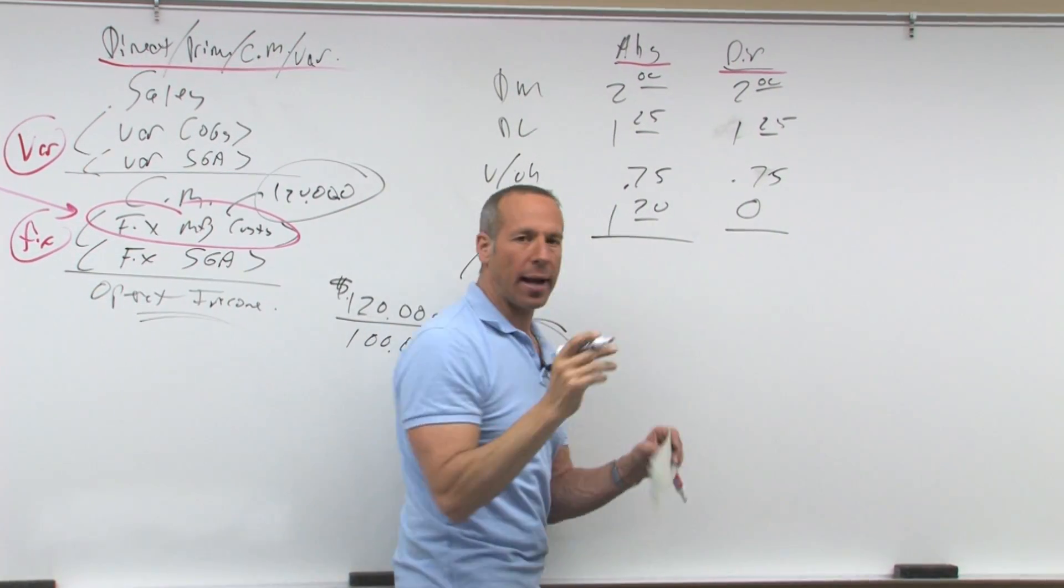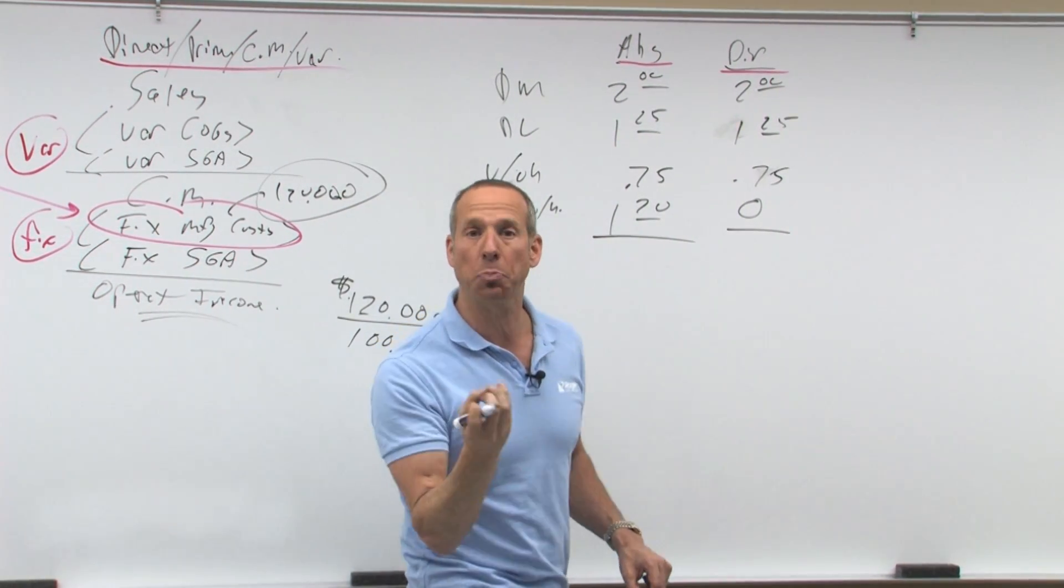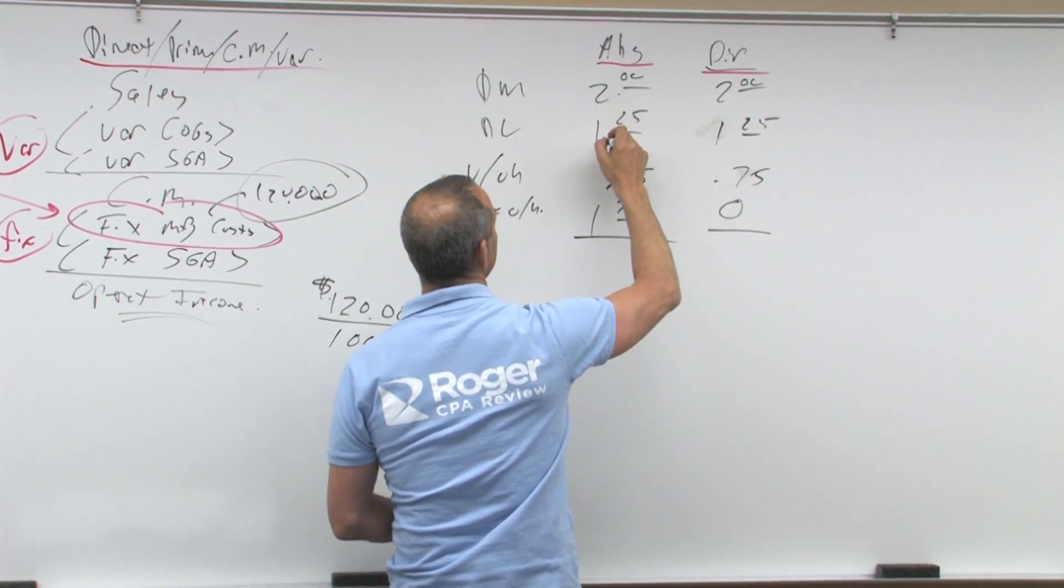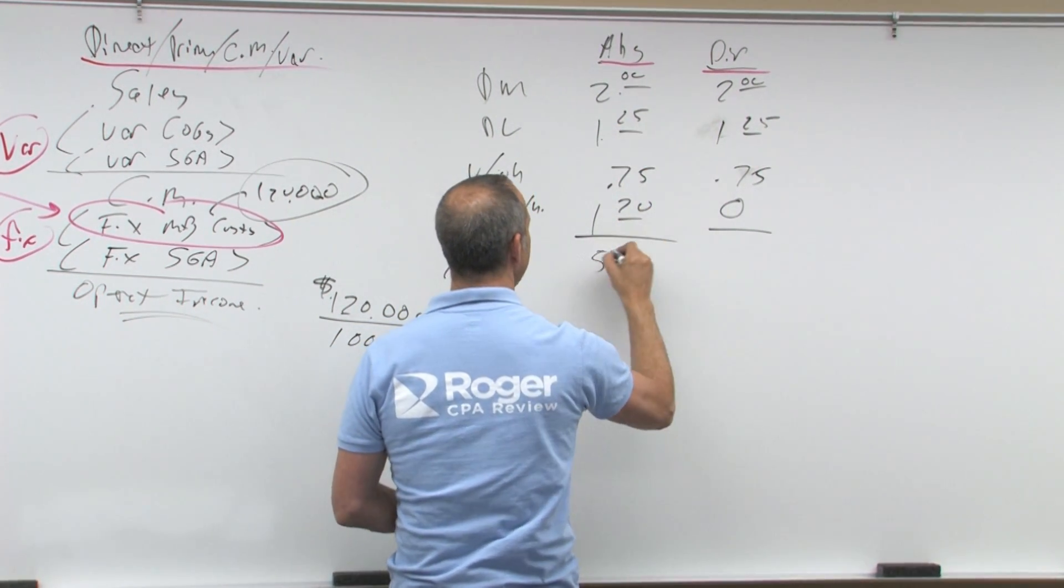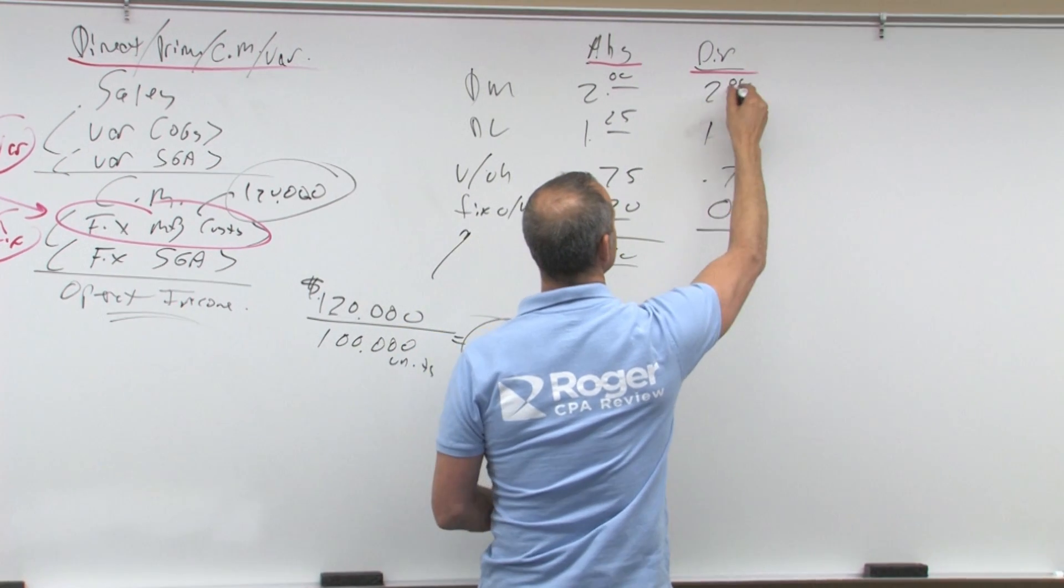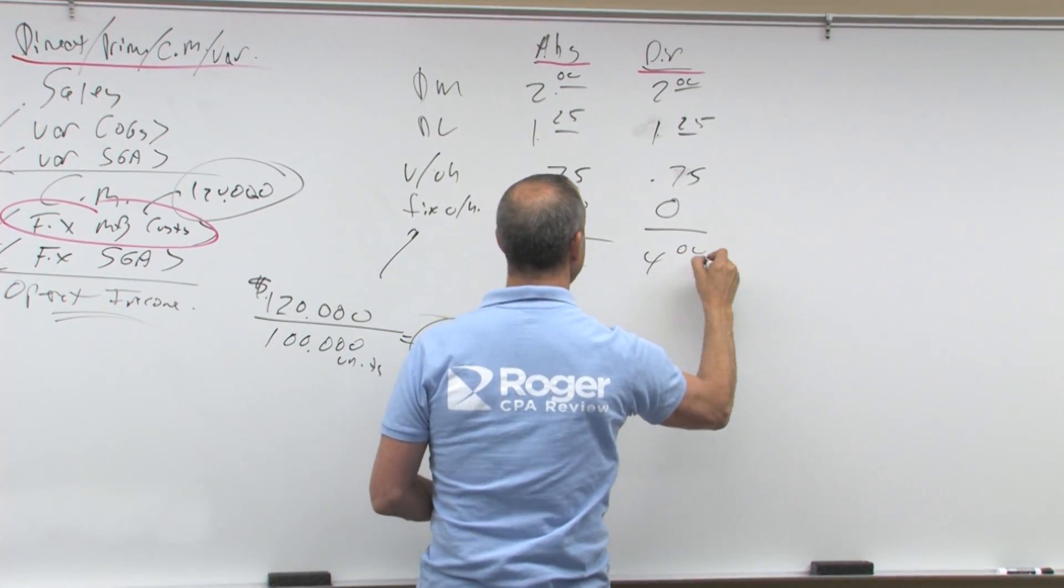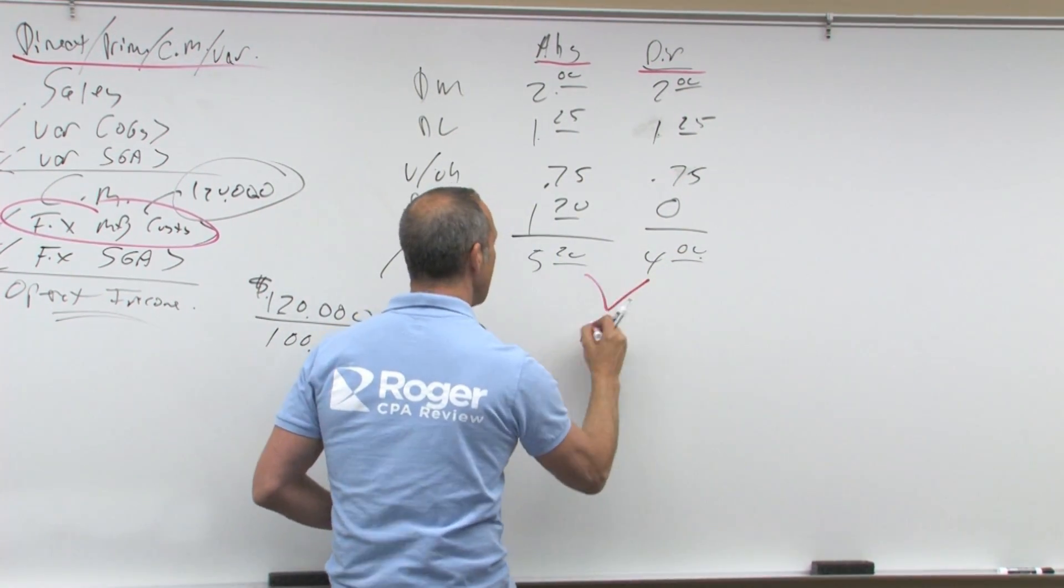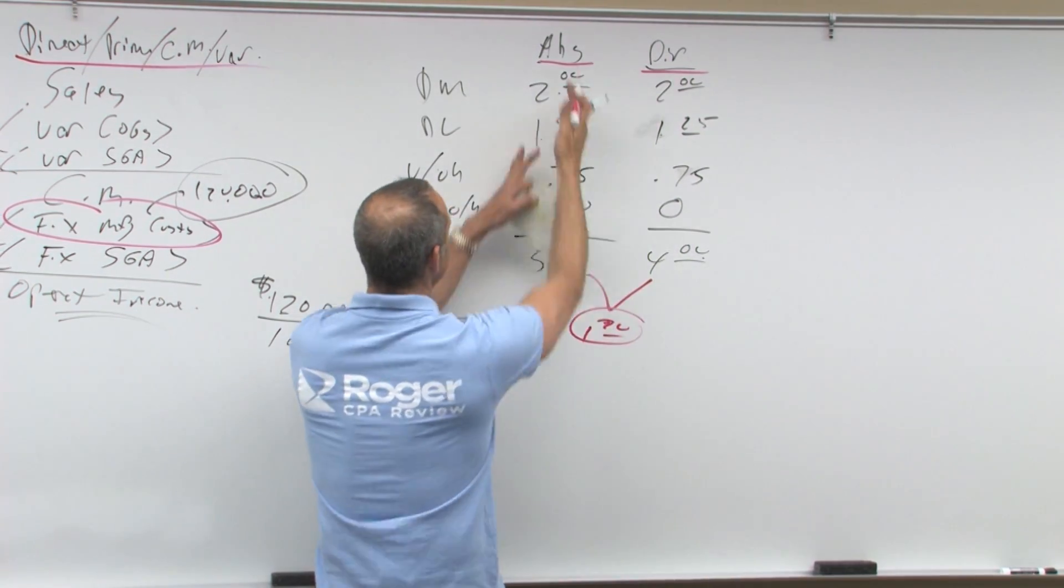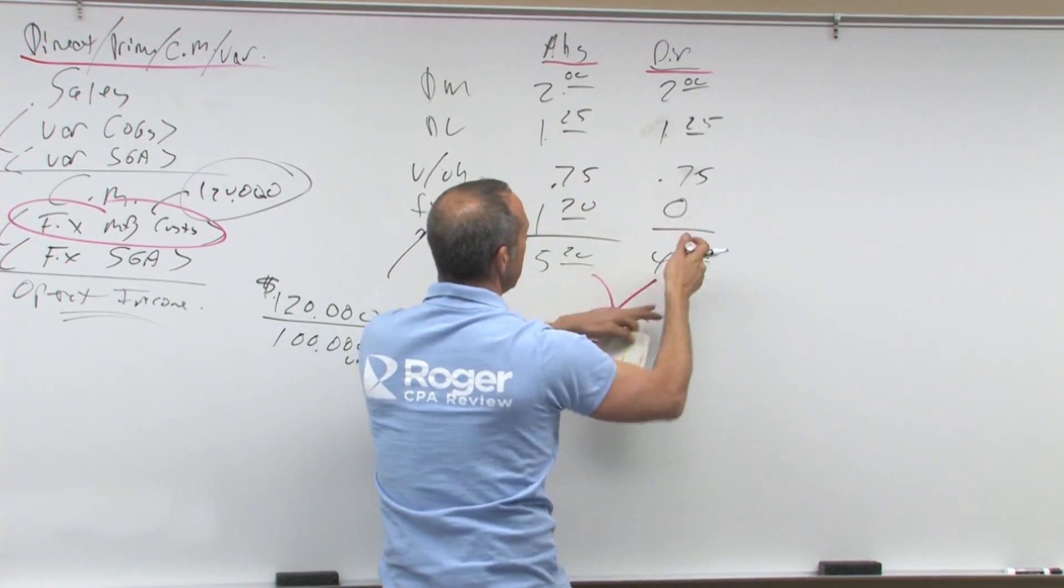So when I talk about how much is my inventoriable cost per unit, this would be $2, $3.25, $4, $5.20. This is $2, $3, $4. The difference is what? The $120,000 that here got absorbed into ending, here got expensed.